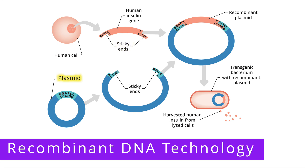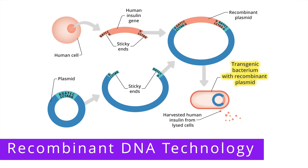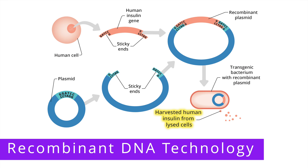Separately, a plasmid is removed from a bacterial cell, and it is also cut using restriction enzymes, producing sticky ends. The human insulin gene is then inserted into the plasmid, forming a recombinant plasmid. This recombinant plasmid is then inserted into a bacterial cell, creating a transgenic bacterium. The transgenic bacterium then goes through a fermentation process, where it replicates and produces insulin, and that insulin is then harvested and purified for medical use.